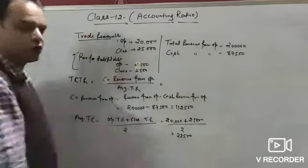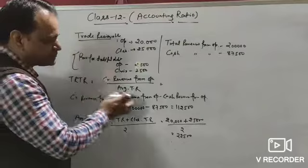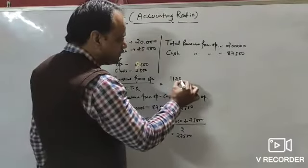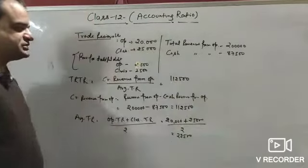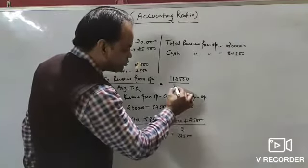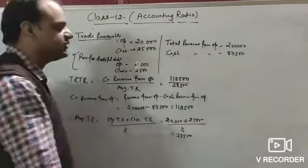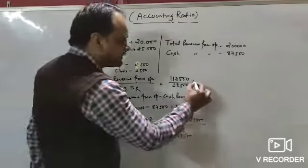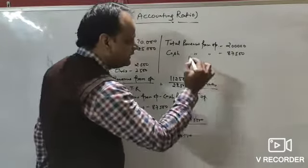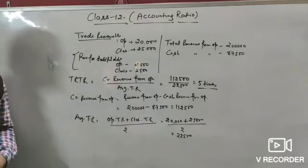Putting values in the formula: credit revenue from operation ₹1,12,500 divided by average trade receivable ₹22,500 = 5 times. This is your trade receivable turnover ratio.